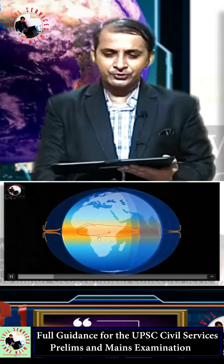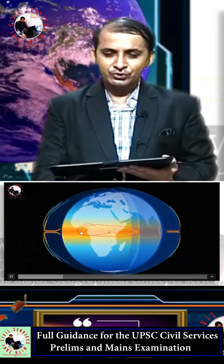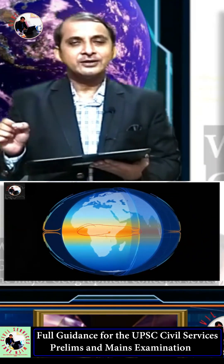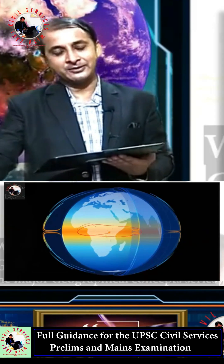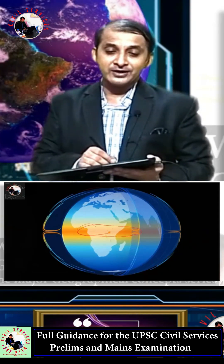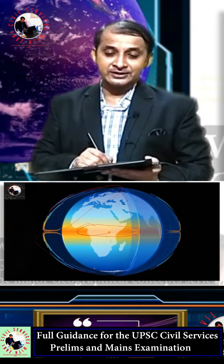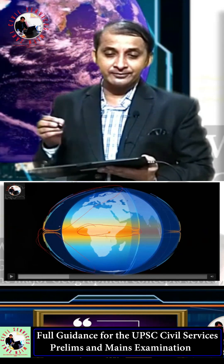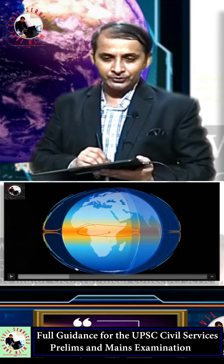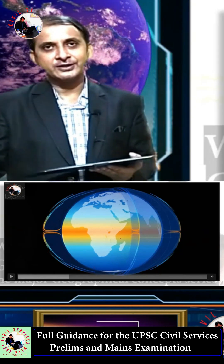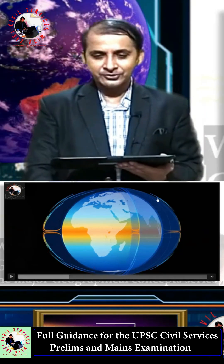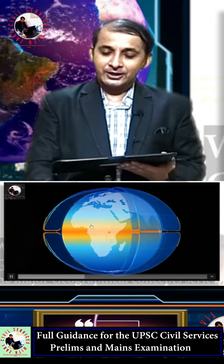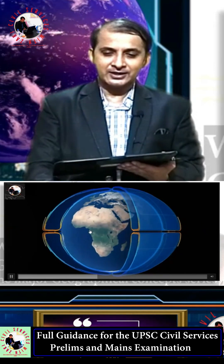If we assume our Earth is not rotating, there will be only one circulation cell. But as we know, our Earth is rotating, and after rotation it converts into three cells. Here you can see: this is a static Earth model with one cell, and since Earth is not static, rotation changes everything.